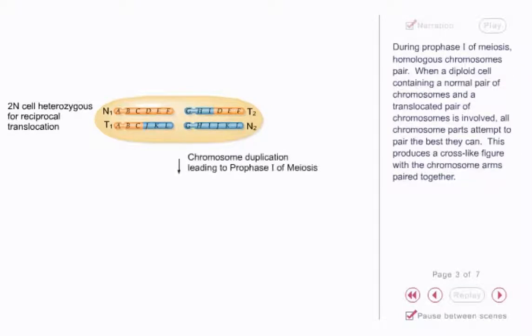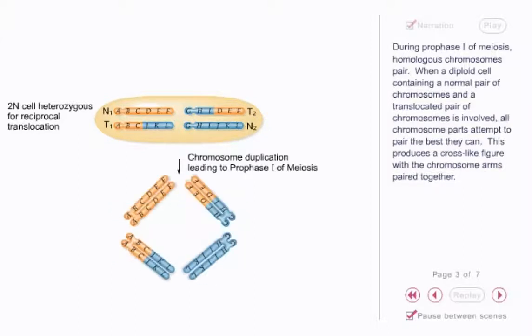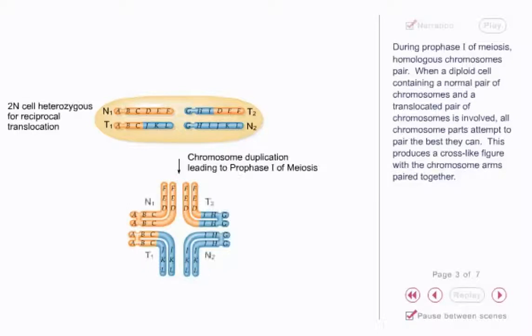During prophase I of meiosis, homologous chromosomes pair. When a diploid cell containing a normal pair of chromosomes and a translocated pair of chromosomes is involved, all chromosome parts attempt to pair the best they can. This produces a cross-like figure with the chromosome arms paired together.